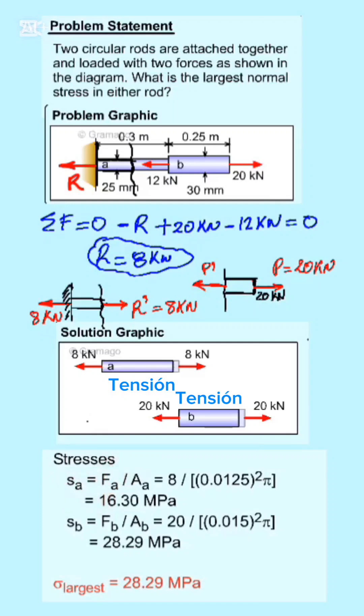Once we have the loads, now the simplest thing is to calculate the stress. The stress is the load over the area. For example, for the first section, the thin section, the load is eight kilonewtons, so we have eight times ten to the three.